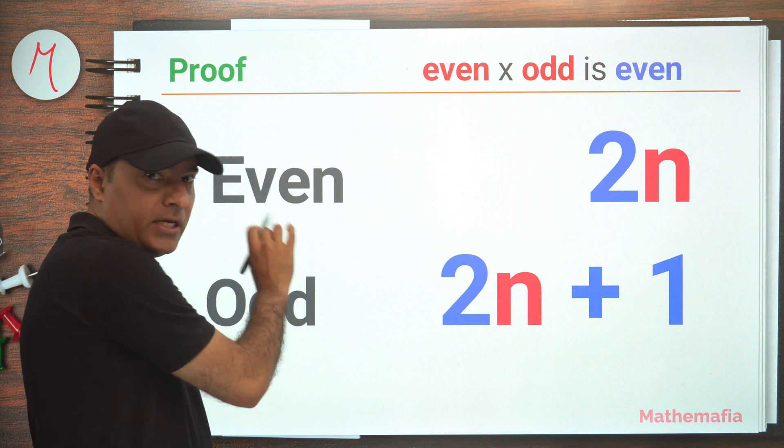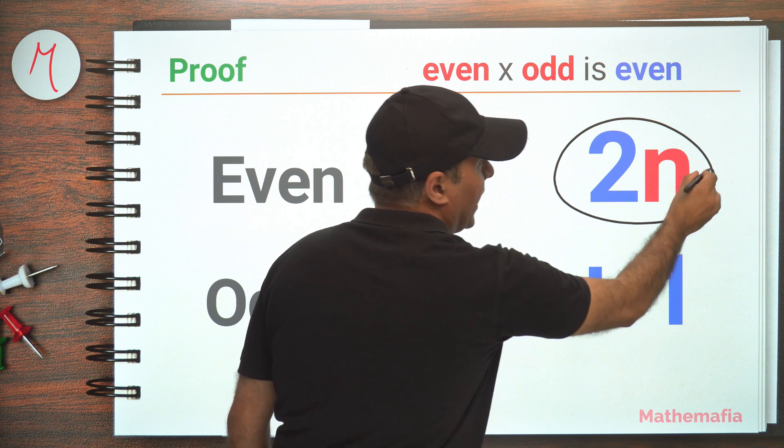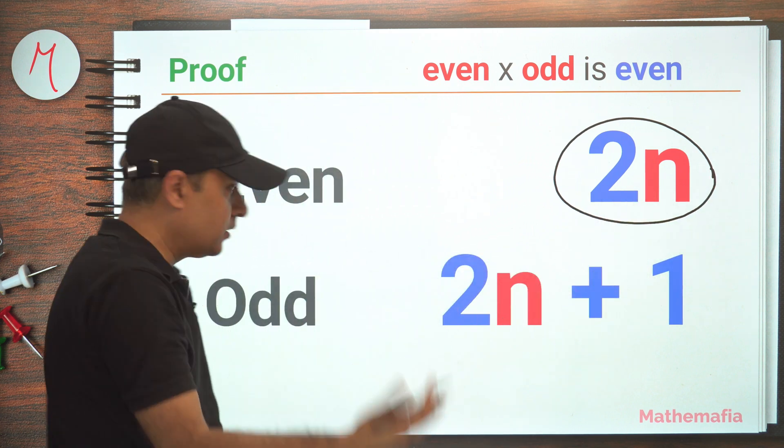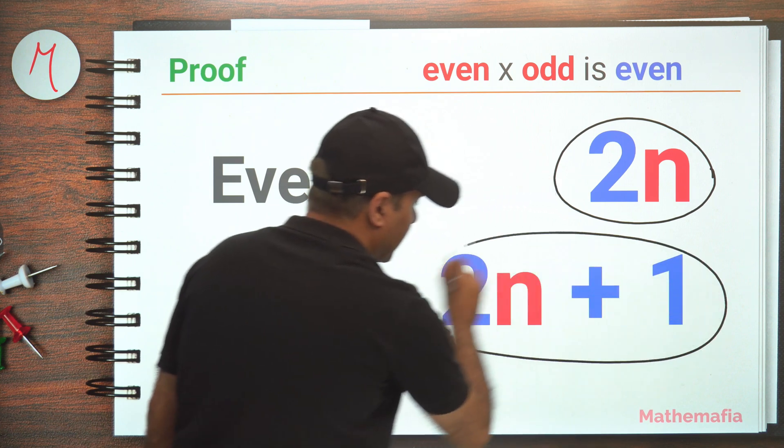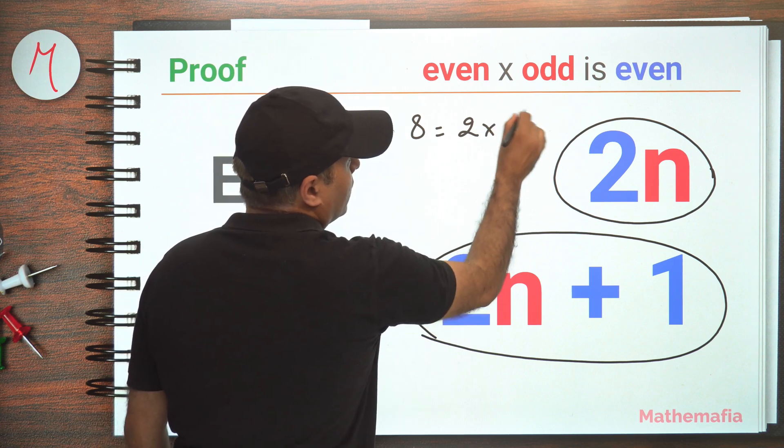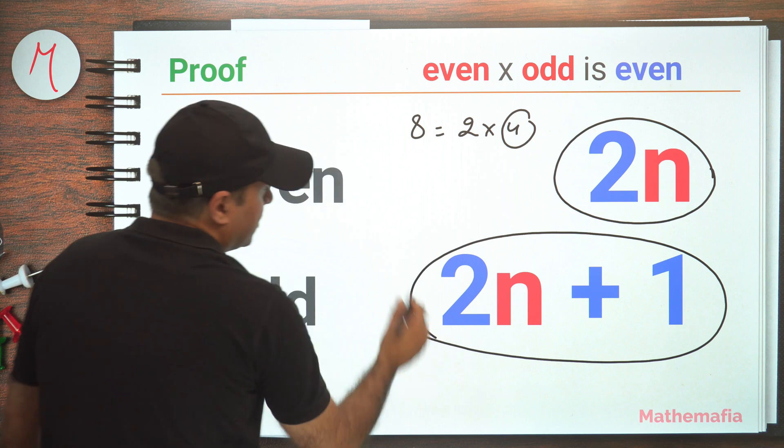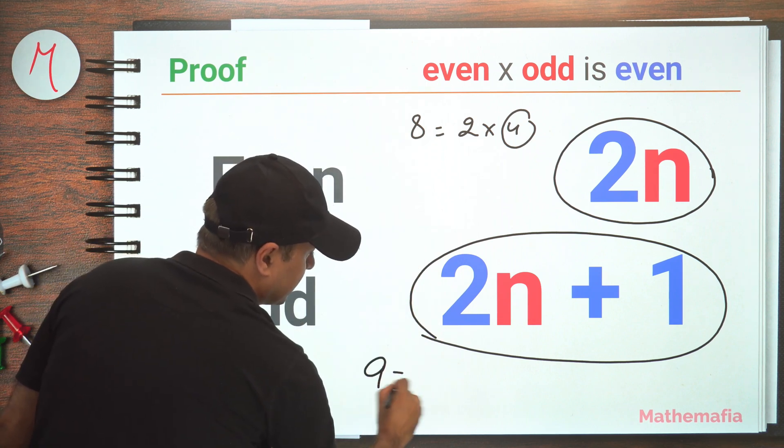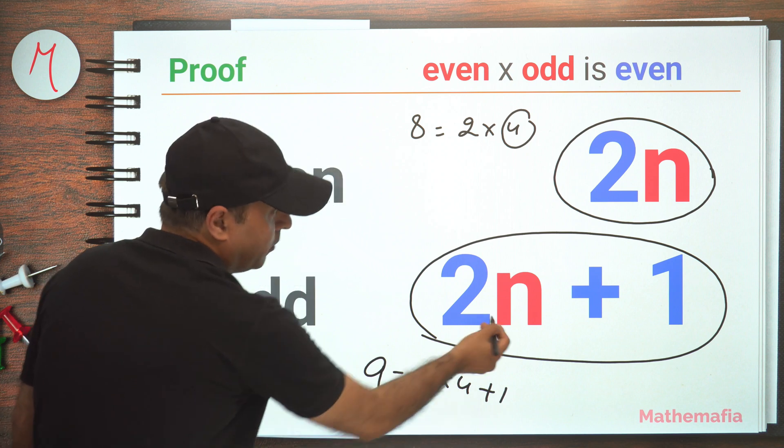We know that every even number can be written in the form 2 into n, where n is an integer, and every odd number can be written as 2n plus 1. For example, 8 can be written as 2 into 4, so 2n. Similarly, 9 can be written as 2 into 4 plus 1, so this is of the form 2n plus 1.